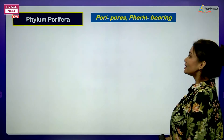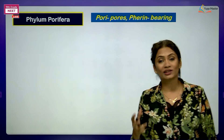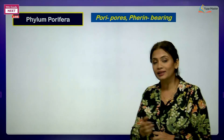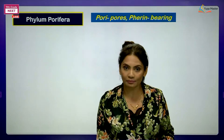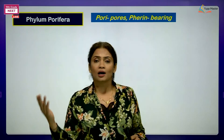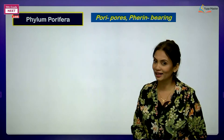Starting with Phylum Porifera - where does the name come from? It starts with 'pori' meaning pores, and 'phera' comes from 'pherin' meaning bearing, which means having. So these are animals which have pores on their body surface. Now, in our last lecture we classified animals according to their grade of organization - whether cellular, tissue, or organ - then according to symmetry, coelom, number of germ layers, and segmentation. We will study each phylum in the same way.